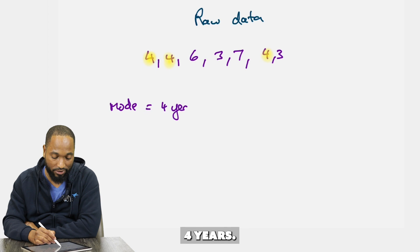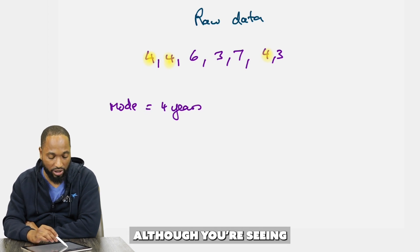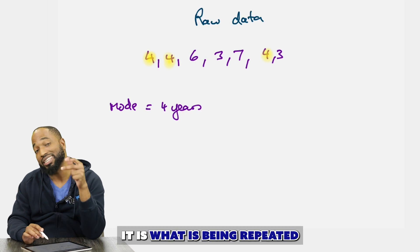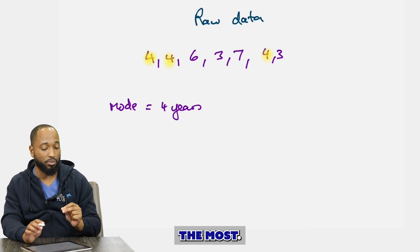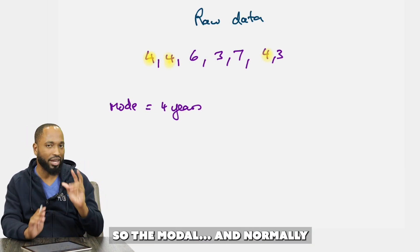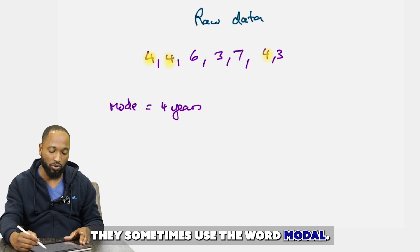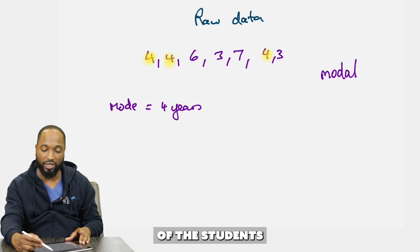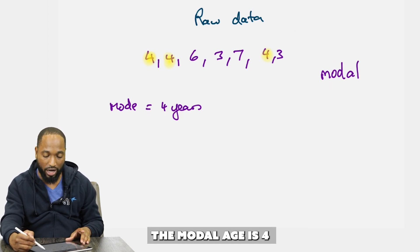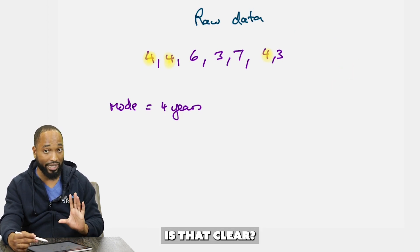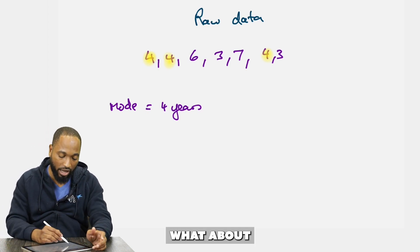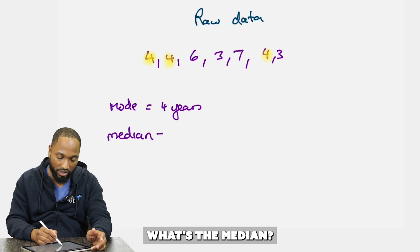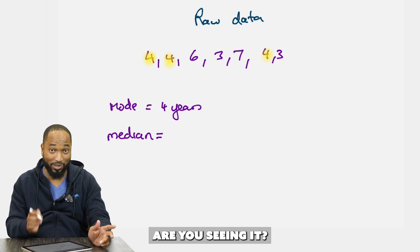Four appears three times. Remember, the mode isn't how many times it's repeated — it's what is being repeated the most. Questions sometimes use the word 'modal,' like 'what's the modal age?' The modal age is four.